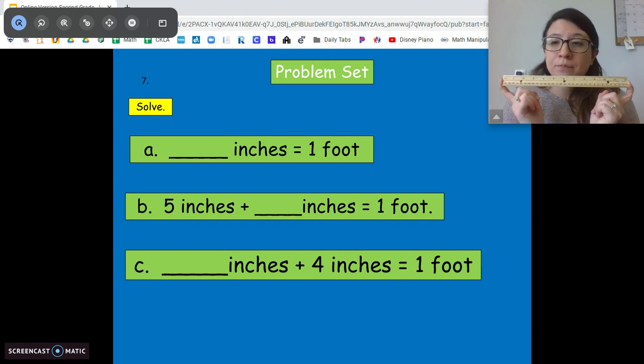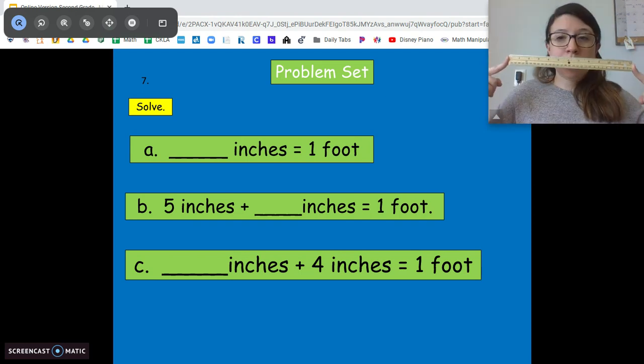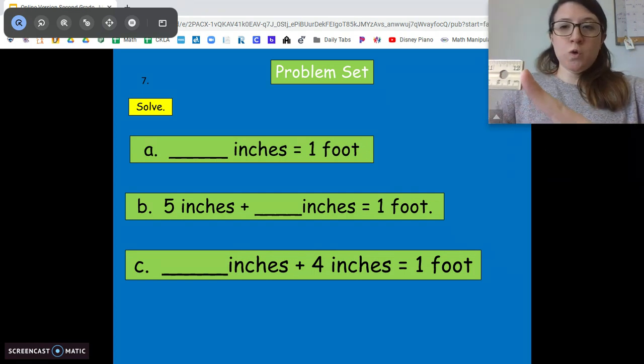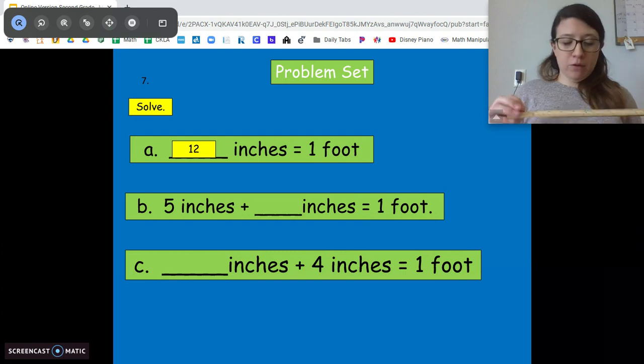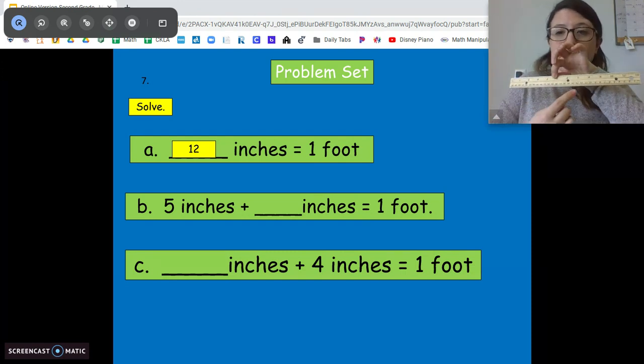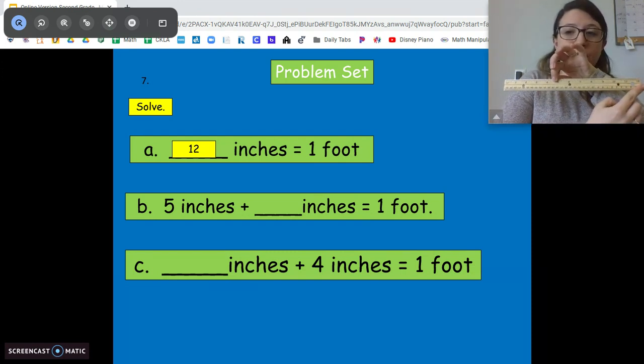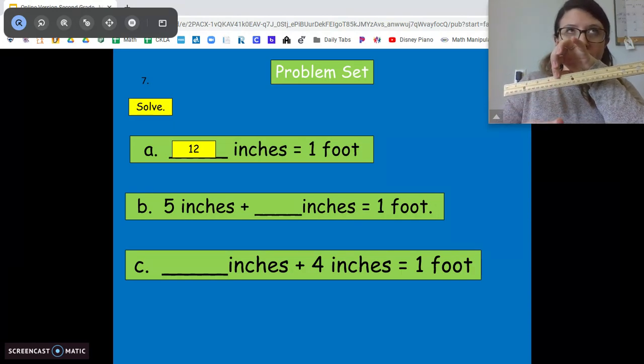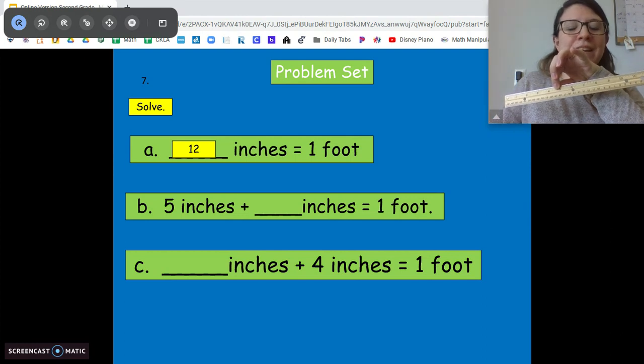And then I want you to try and solve these problems. We learned today that how many inches equals one foot? 12. Good. Now if I have five inches, how many more do I need to equal one foot? Seven inches. Good.